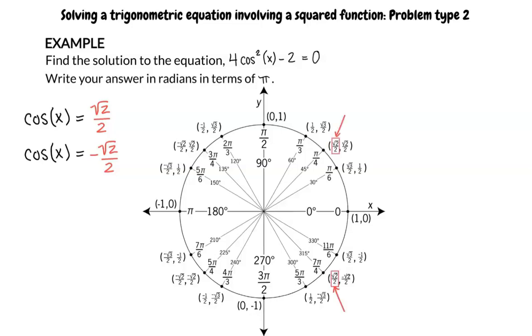Yes, and we can see that these values for root 2 over 2 are pi over 4 and 7 pi over 4. What are the angles for negative root 2 over 2? It looks like they would be 3 pi over 4 and 5 pi over 4.